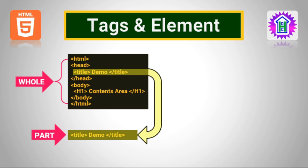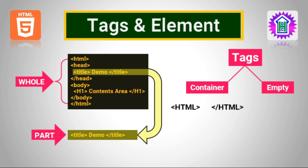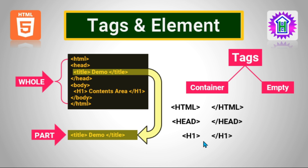Now let us see what are the different types of tags we can use in HTML. The first type is container tag and the second type is empty tag. Container tags are tags that have both an opening and a closing tag, like HTML, head, and H1. The opening tag is called the on tag and the tag that is closed is called the off tag.